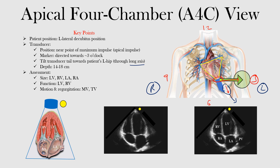So what are we seeing in this view? Why the apical four-chamber view? As the name implies, it gives us a view of the four chambers of the heart — the two atria and the two ventricles. Notice here we have a labeled image, an unlabeled image, and a cartoon depiction — three different ways you can look at it, so hopefully one of them sticks.